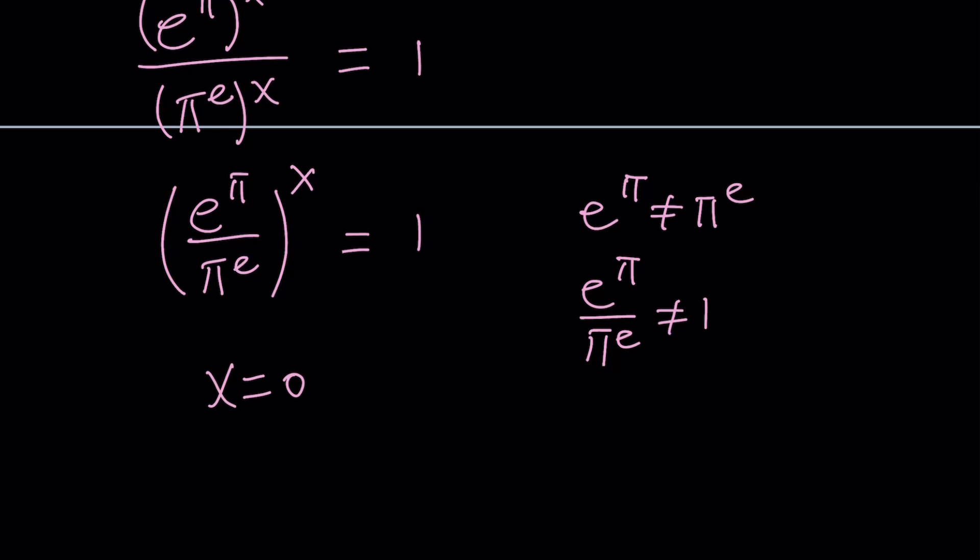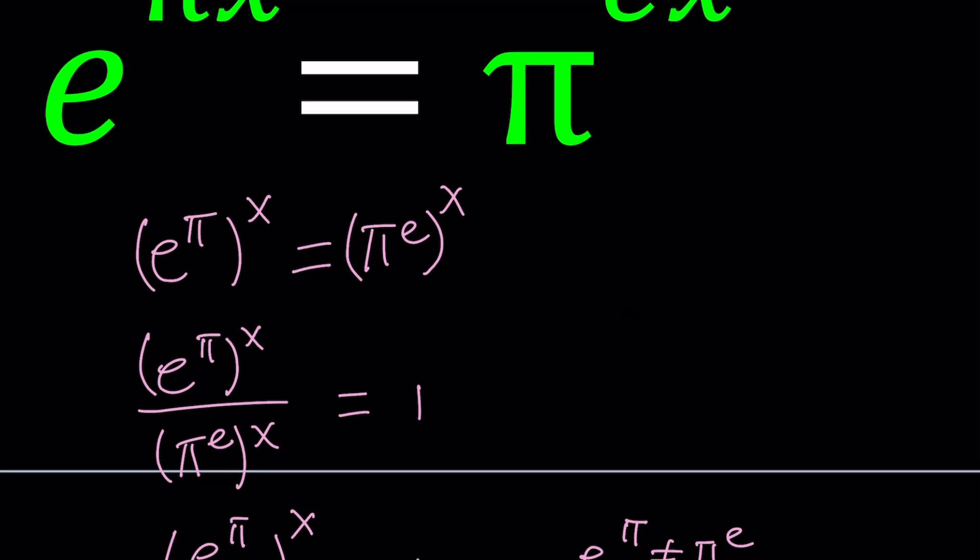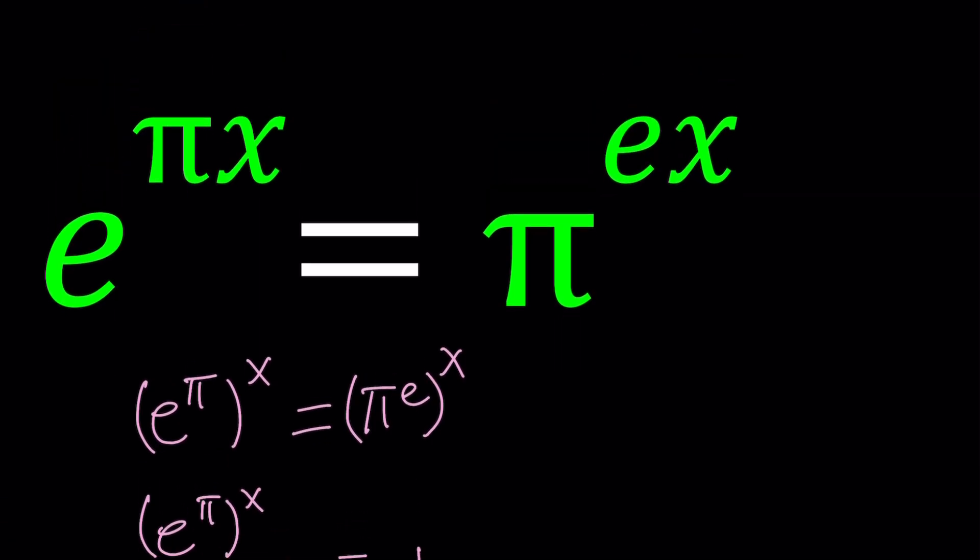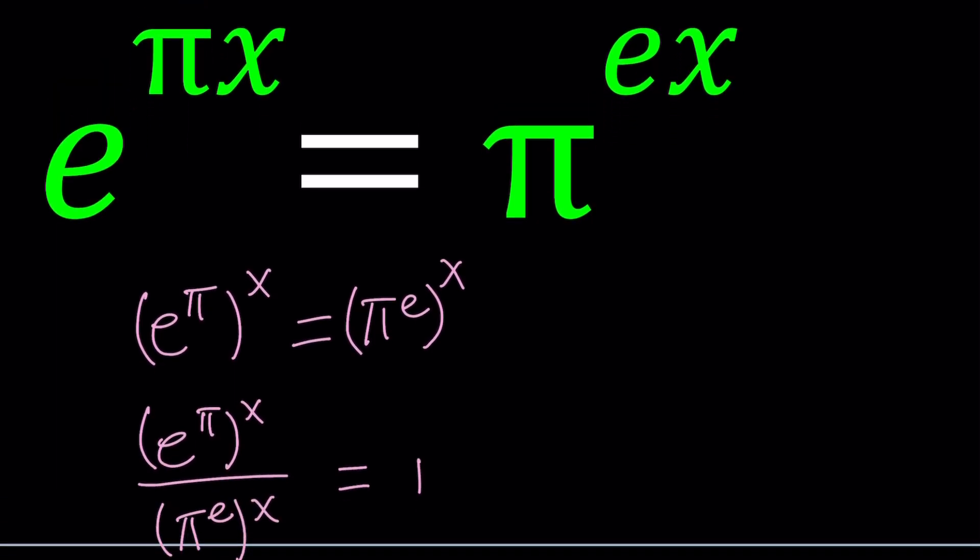So x equals 0 is the real solution to this equation. If you look at the original equation, you're going to notice that it satisfies, the 0 satisfies it because e to the power 0 equals pi to the power 0 because they are both equal to 1. Make sense? So x equals 0 is the solution.